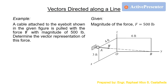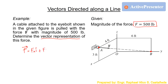Let's look at an example of vectors directed along a line. We have a cable attached to an eyebolt at point A. There is a force F with a magnitude of 500 pounds directed from point A to point B. The question is: determine the vector representation of this force, finding the components FXi plus FYj plus FZk.